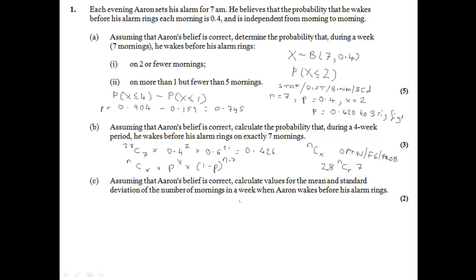Okay, finally then we move on to part C. Assuming Aaron's belief is correct, calculate the values for the mean and standard deviation of the number of mornings in a week when Aaron wakes before his alarm rings. Well, the mean is the expected value, if you like, and to work that out, we simply multiply N times P. In other words, the number of mornings times the probability of success each morning will give you the number of mornings that we would expect him to wake on average.